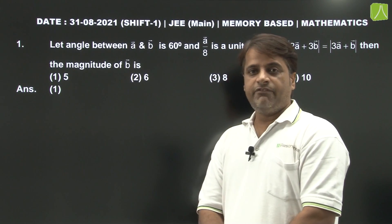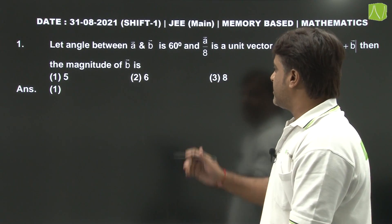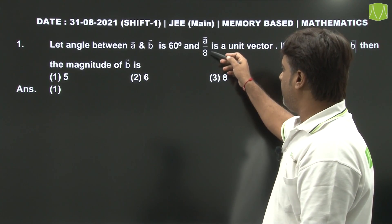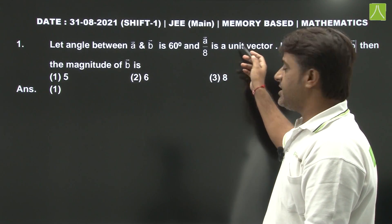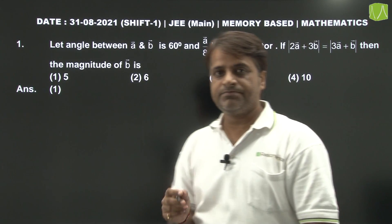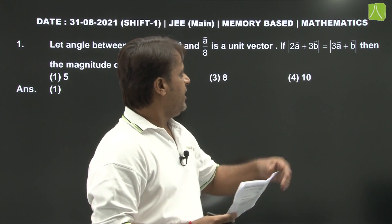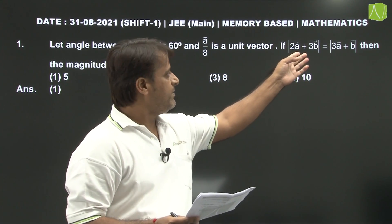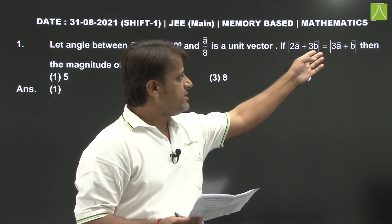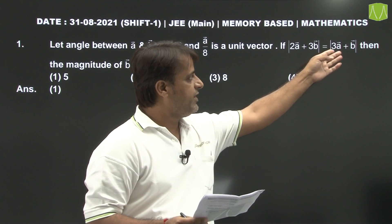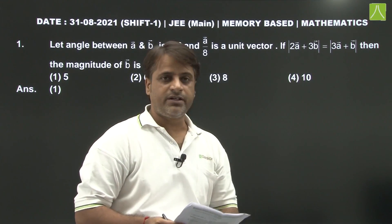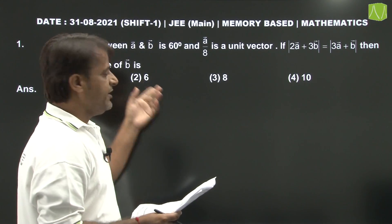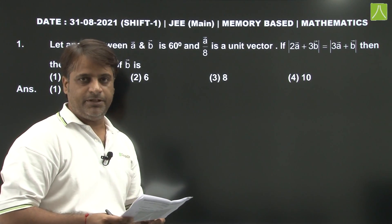Angle between vector A and vector B is 60 degrees and vector A upon 8 is a unit vector. If mod of 2A vector plus 3B is equal to mod of 3A vector plus B vector, then find the value of magnitude of vector B.